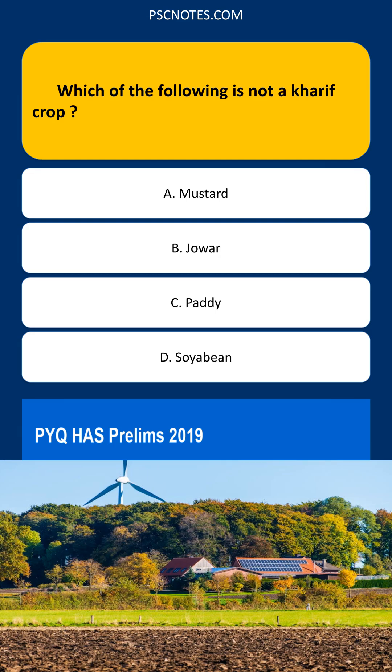Which of the following is not a kharif crop? Mustard, Jowar, Paddy, Soya Bean.